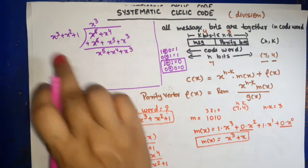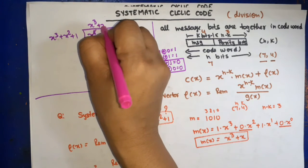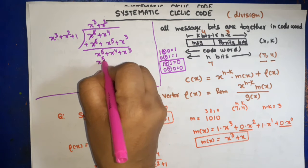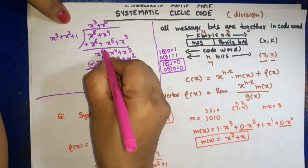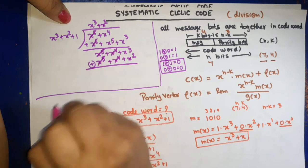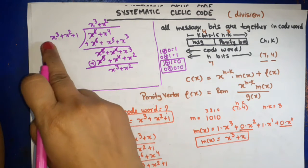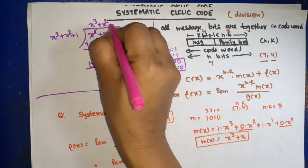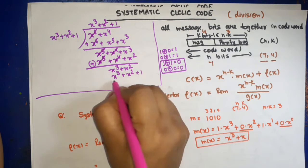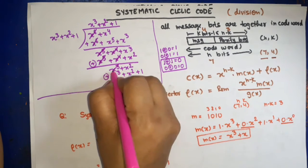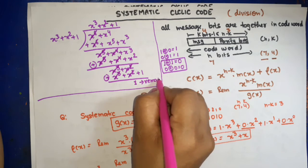Since the highest remaining power x⁵ is still divisible, we multiply the divisor by x², giving x⁵ + x⁴ + x². Applying modulo-2 subtraction: x⁵ cancels, x⁴ cancels, and the new remainder is x³ + x². Now the highest power x³ equals the divisor's highest power, so we multiply by 1, giving x³ + x² + 1. After modulo-2 sum: x³ cancels, x² cancels, and the final remainder ρ(x) = 1.